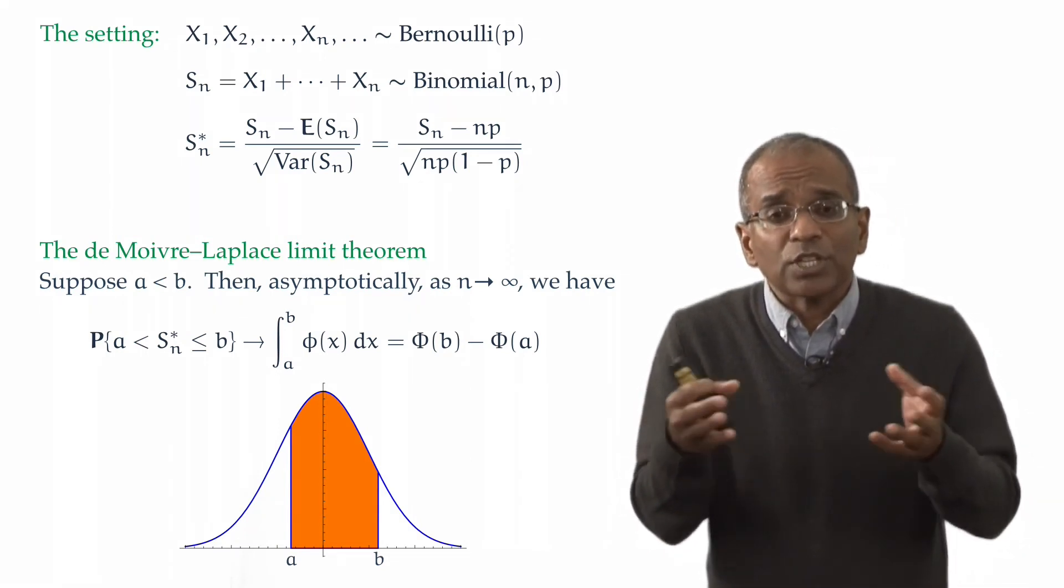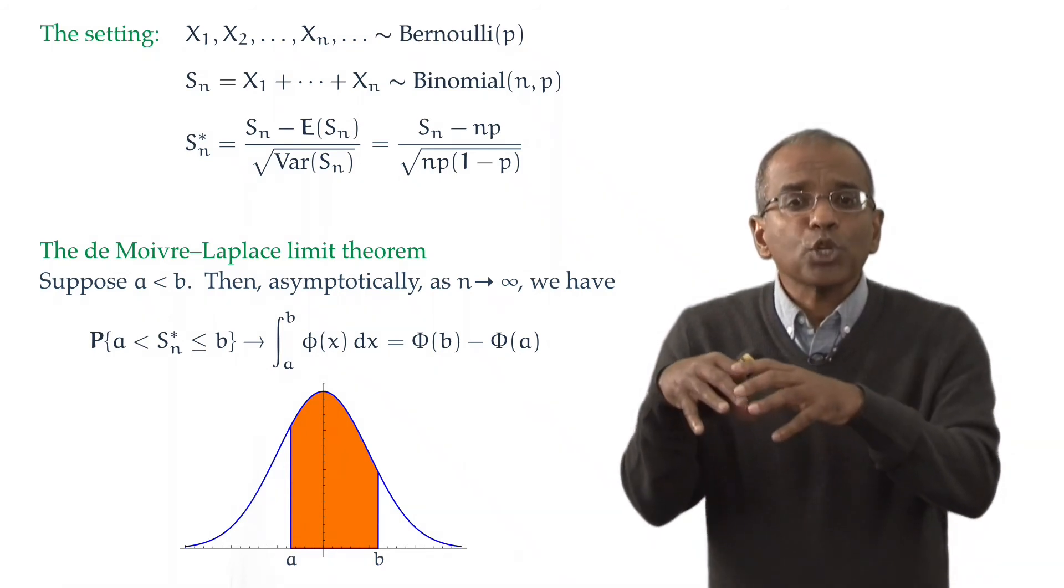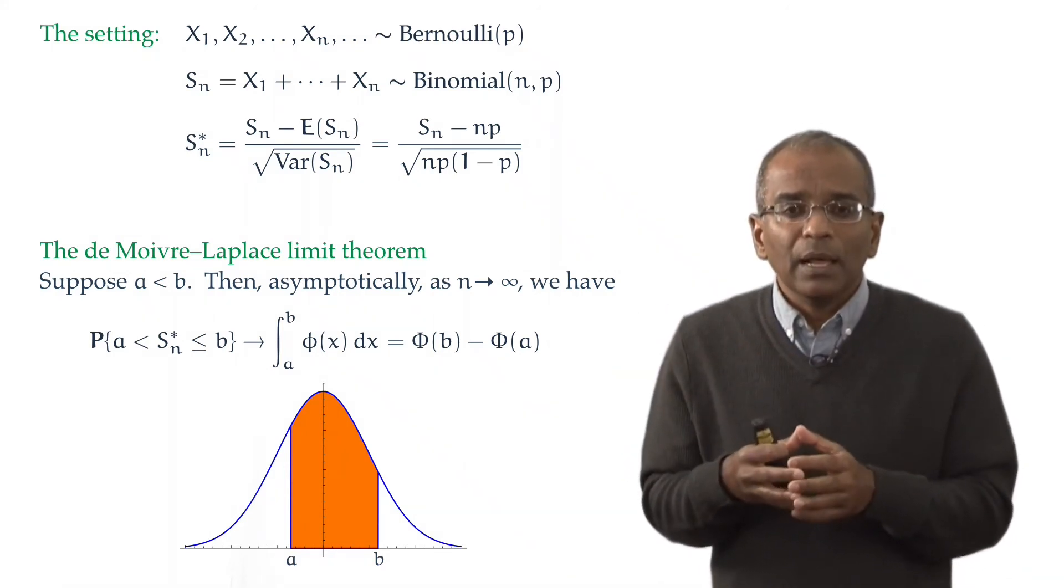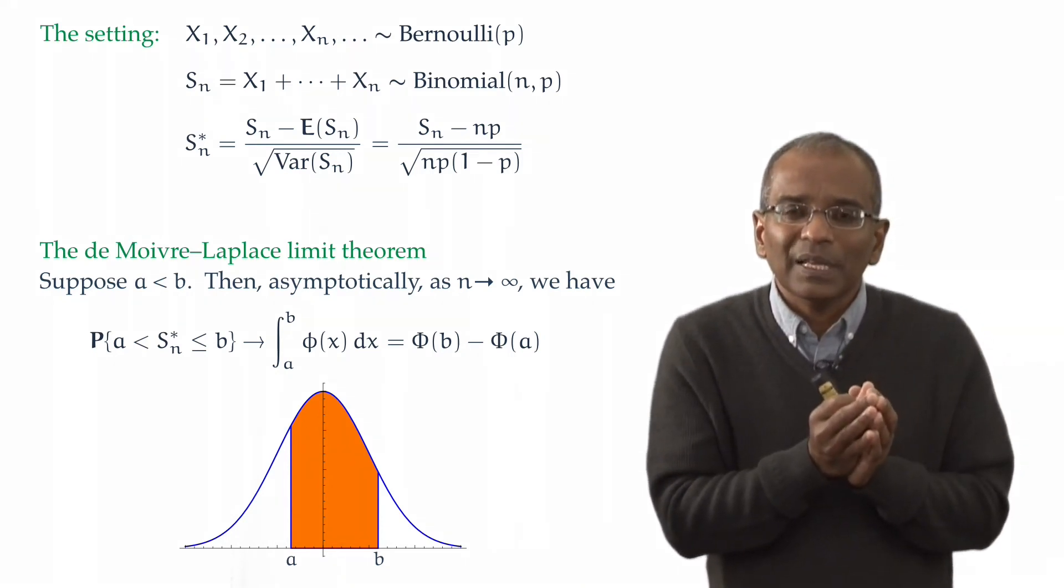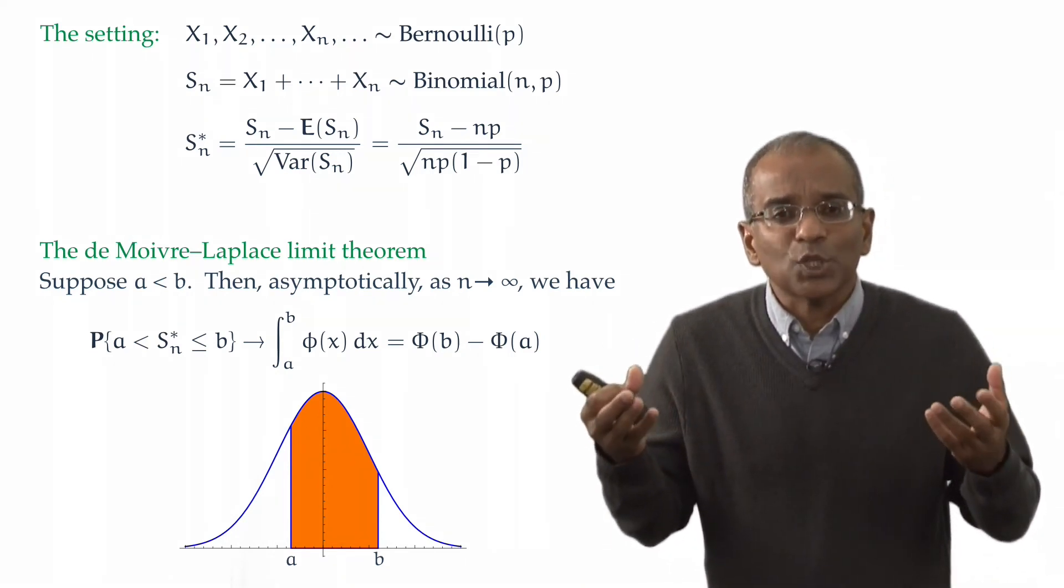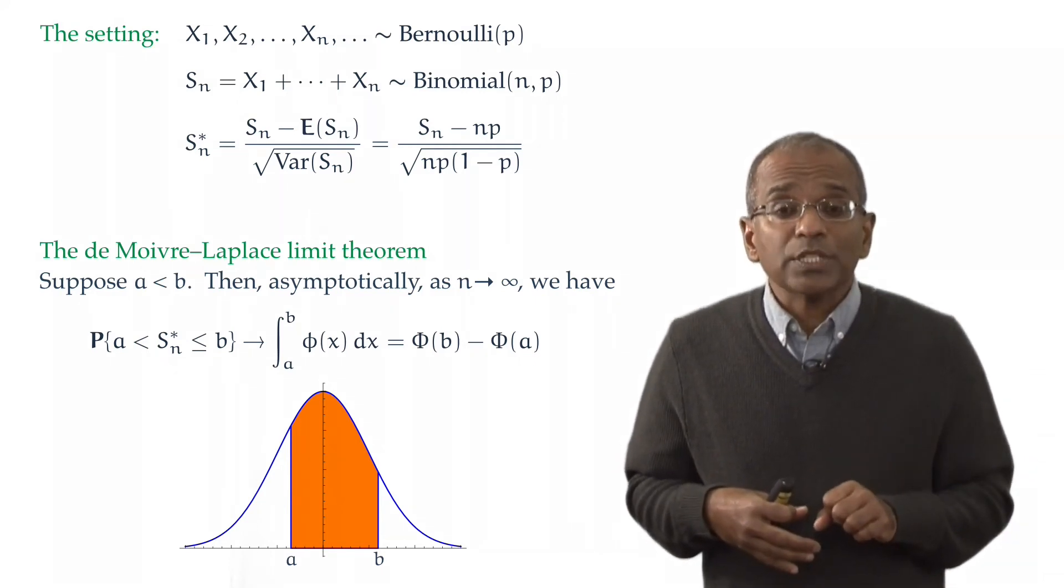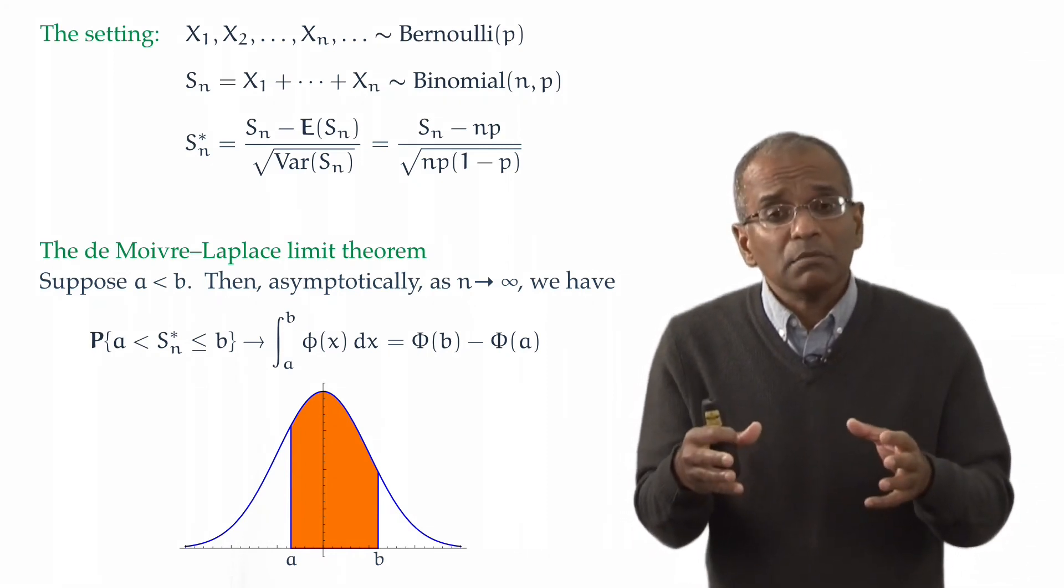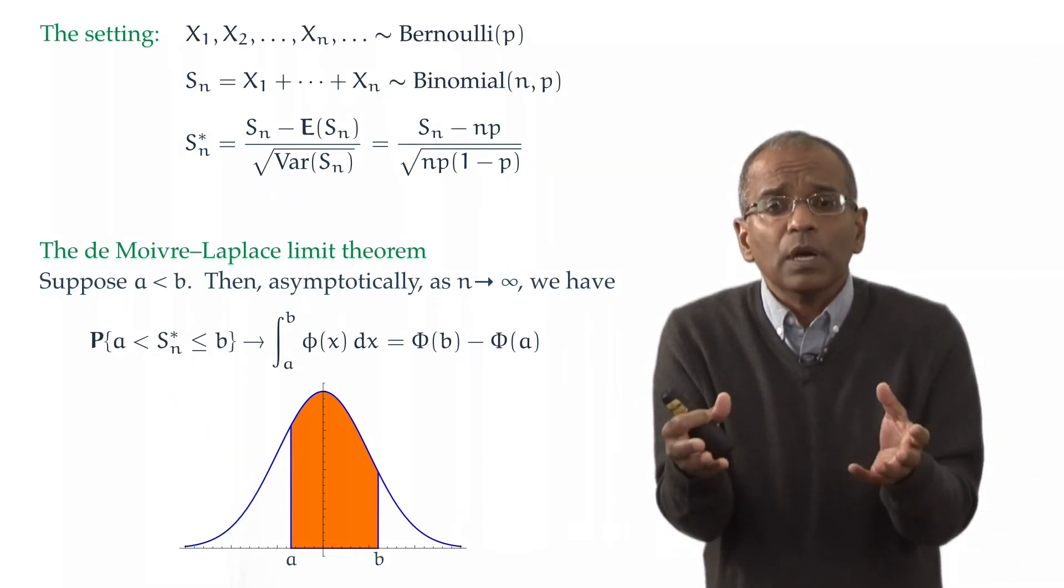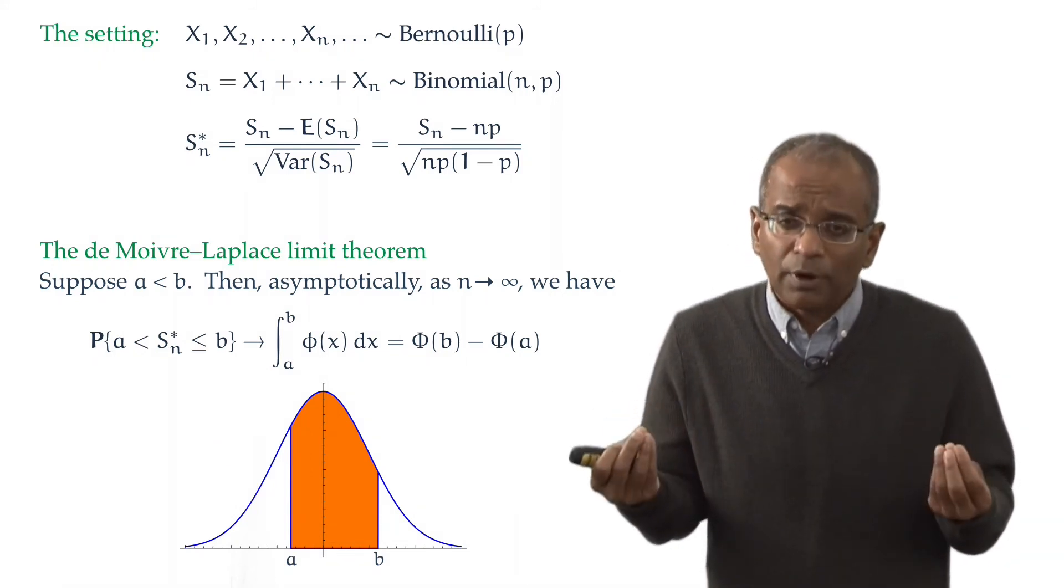Or, another variation on the same theme, for a given n if we approximate a binomial probability by this area under a normal curve, how much error do we make? Perfectly legitimate questions and important. And again, let me fob this off by an empirical observation which can be supported by some theory.